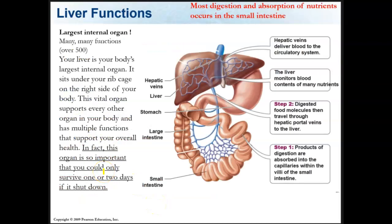For the last part of this lecture, we're going to talk about the accessory organs of the digestive tract, starting with the liver. Remember that most digestion and absorption of nutrients occur in the small intestine. The liver is the largest internal organ, with over 500 functions. It sits under your rib cage on the right side of your body, supports every other organ in some way, and is so important that you could only survive one or two days if it shuts down.